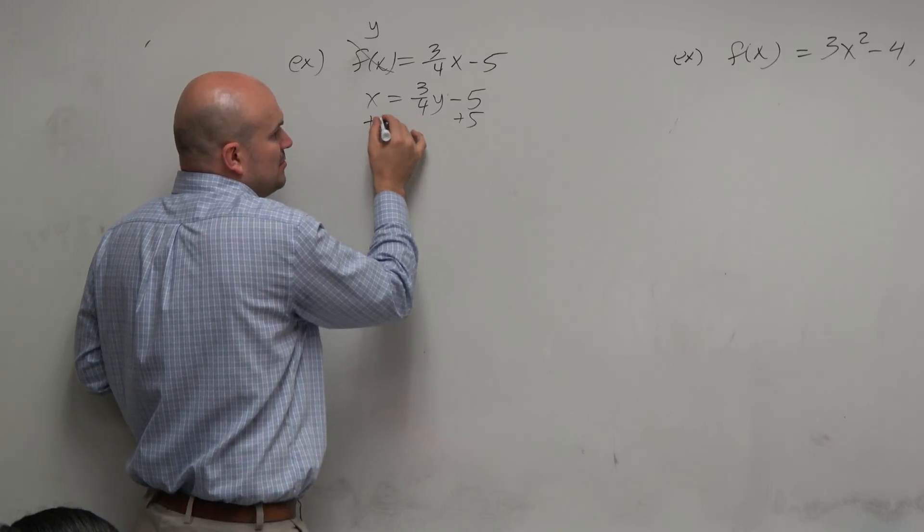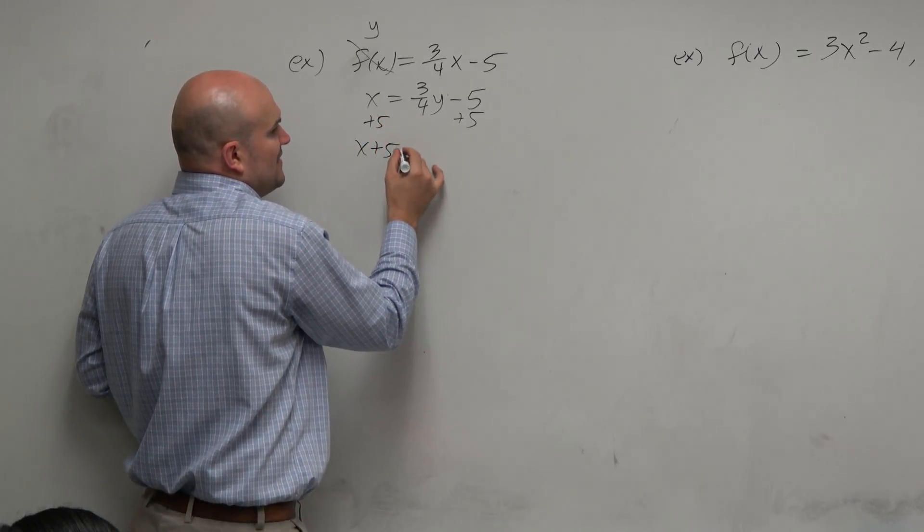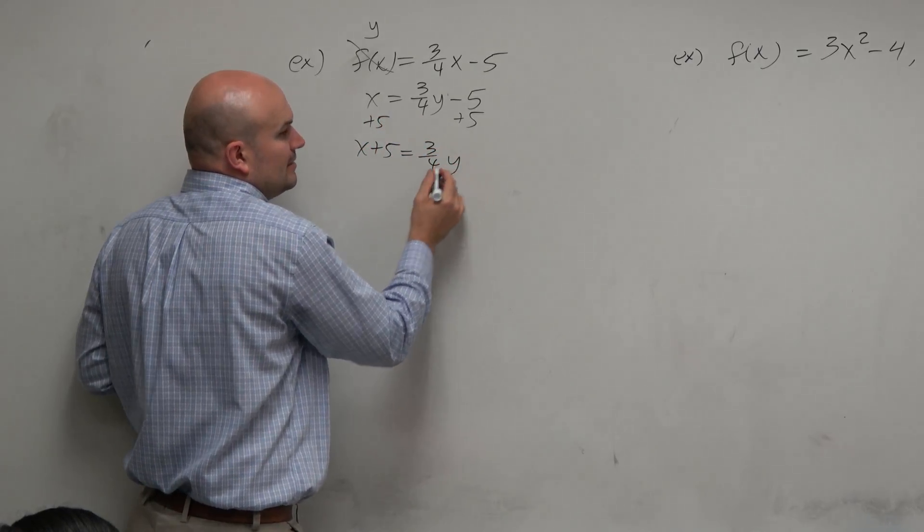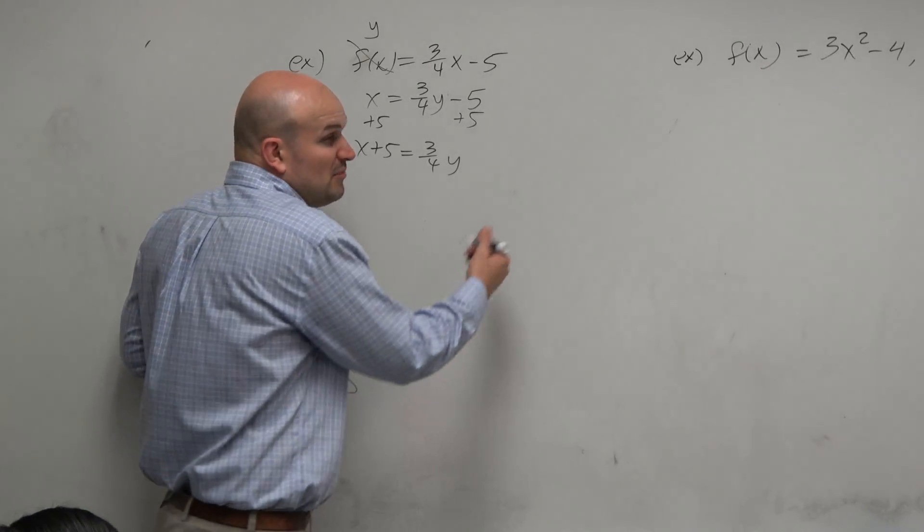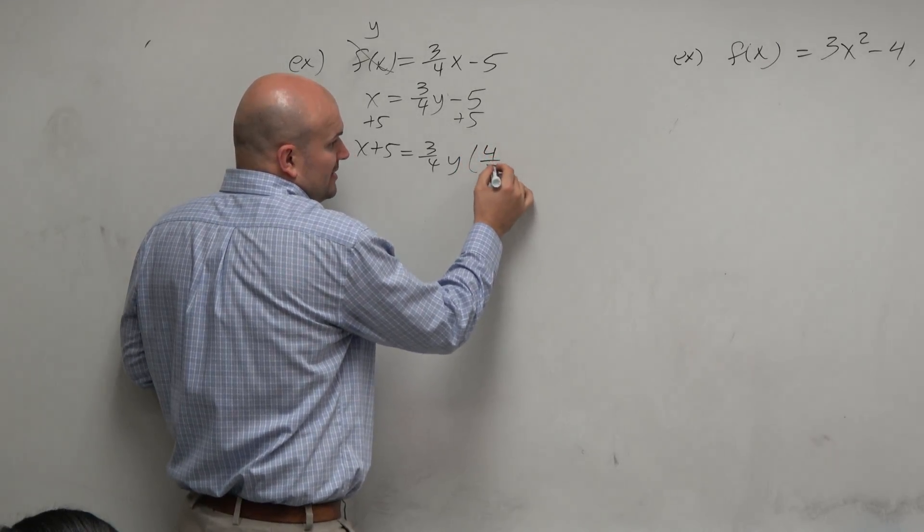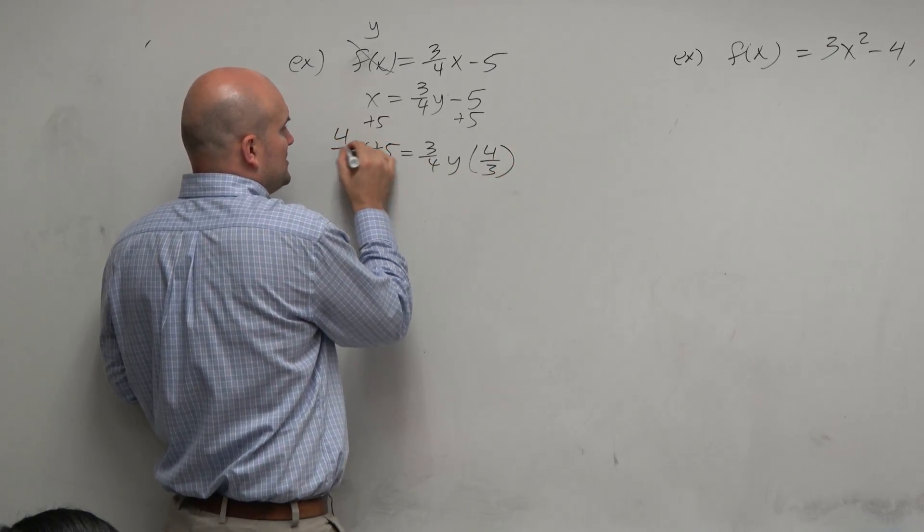To solve for y, you're going to add 5 to both sides. x plus 5 equals three-fourths y. How do you undo multiplying by three-fourths? Multiply by the reciprocal or divide by a fraction, but I prefer to multiply by the reciprocal.